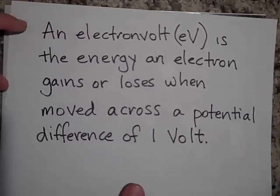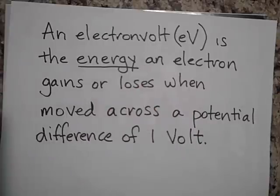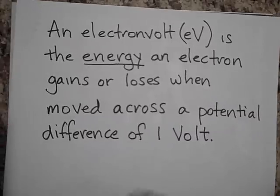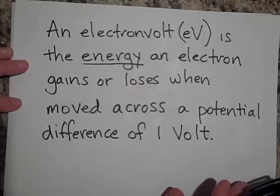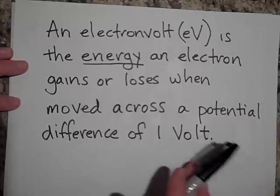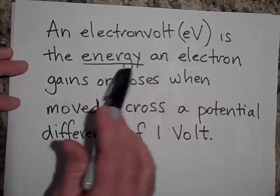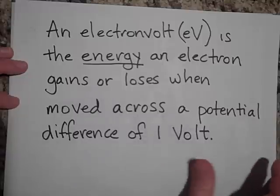Okay, next one. I need to tell you if I haven't already that an electron volt is the energy an electron gains or loses when moved across a potential difference of one volt. We use joules for energy, but a lot of times scientists will use electron volts because it's easier to work with in certain circumstances. So an electron volt is a unit of energy, defined as the energy that an electron, or for that matter a proton, gains or loses when moved across a potential difference of one volt.